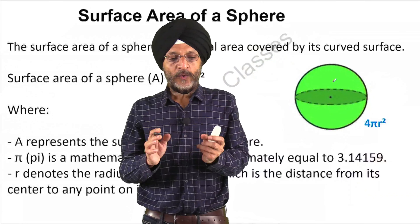One face is known as the curved face and the other is known as the flat face. The sphere as well as the hemisphere are related to each other, but the hemisphere has a flat base whereas a sphere has no base.